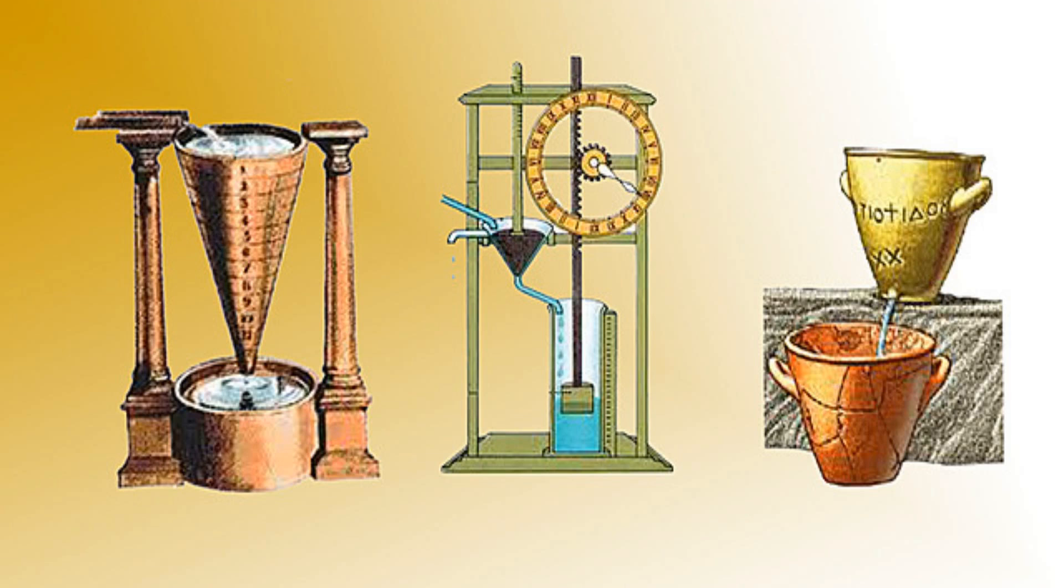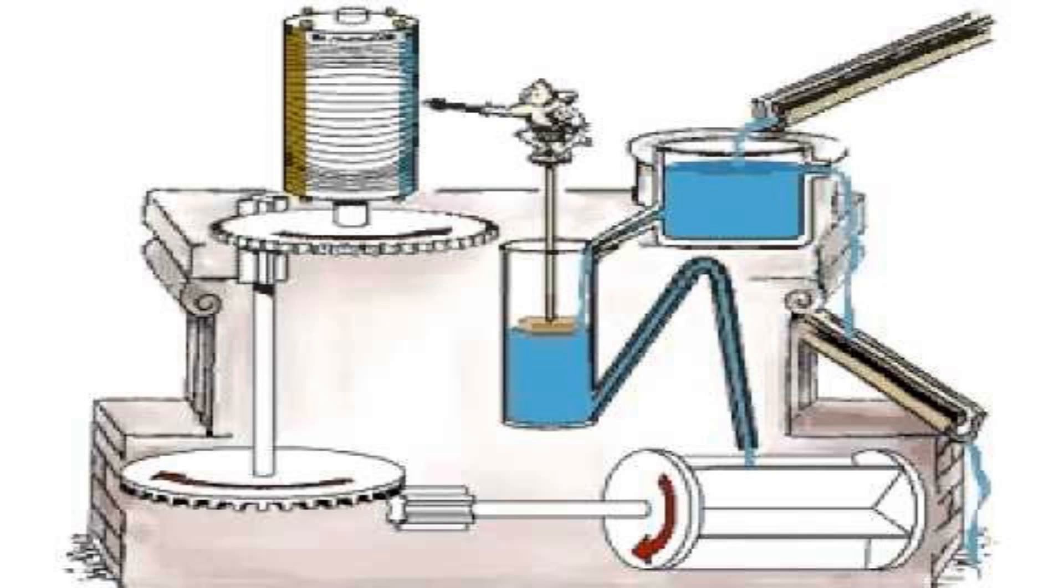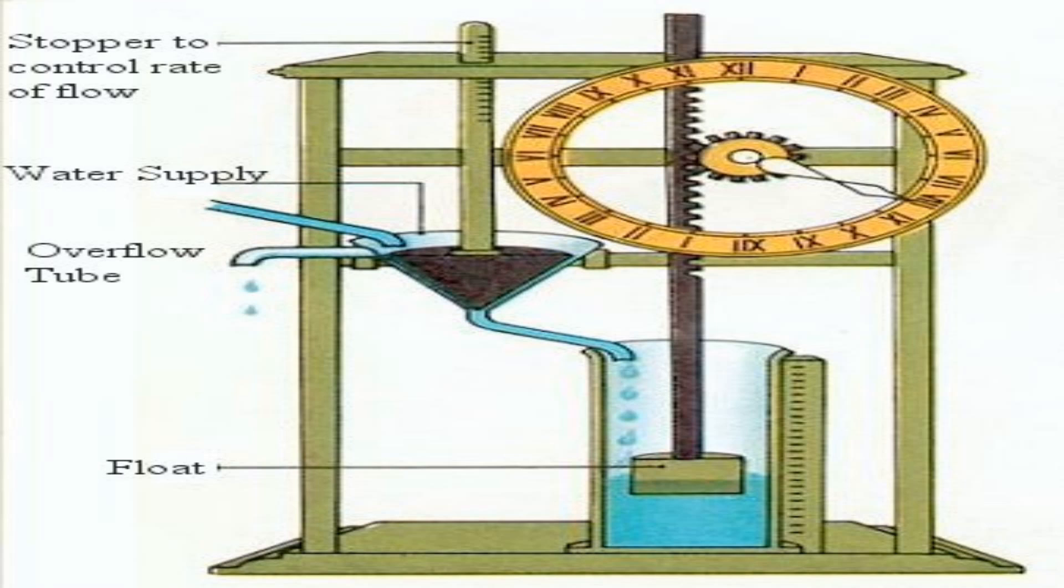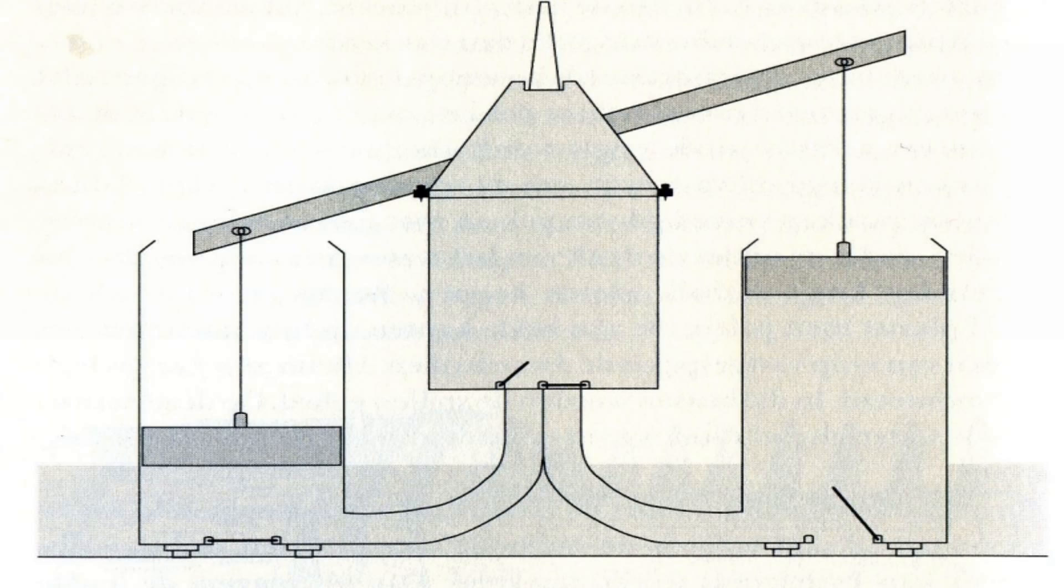How did Ctesibius improve the klepsidra? The main problem with the klepsidra was that it was not very accurate or consistent. The flow of water depended on many factors, such as the size and shape of the hole, the pressure and temperature of the water, and the evaporation and leakage of water. As a result, the klepsidra would lose or gain time over long periods.